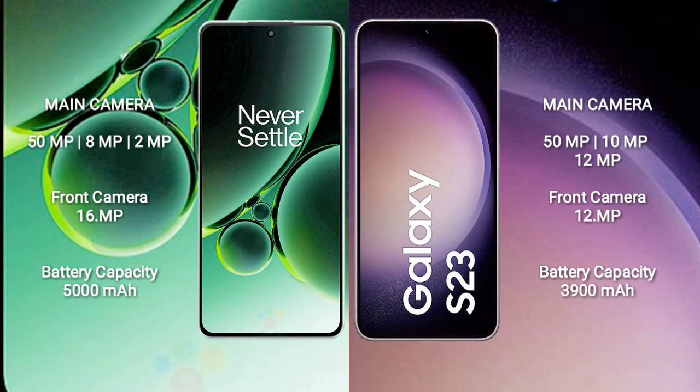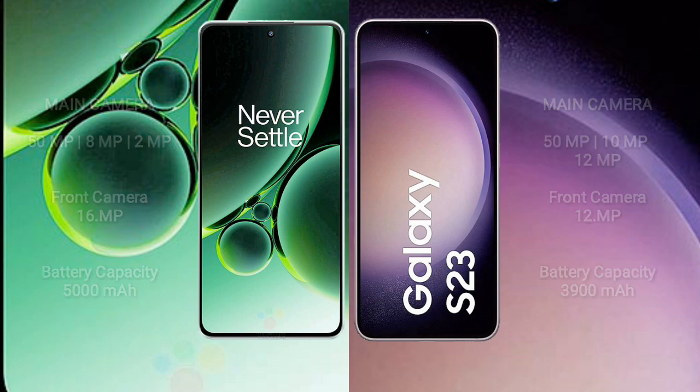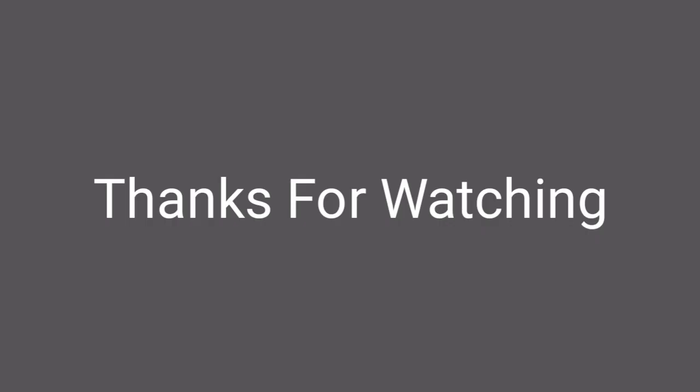OnePlus Nord 3 has a 5000mAh battery with 80W fast charging support. Samsung Galaxy S23 has a 3900mAh battery with 25W fast charging support.